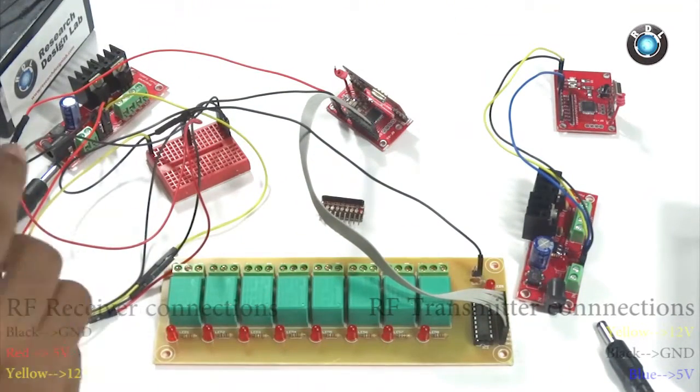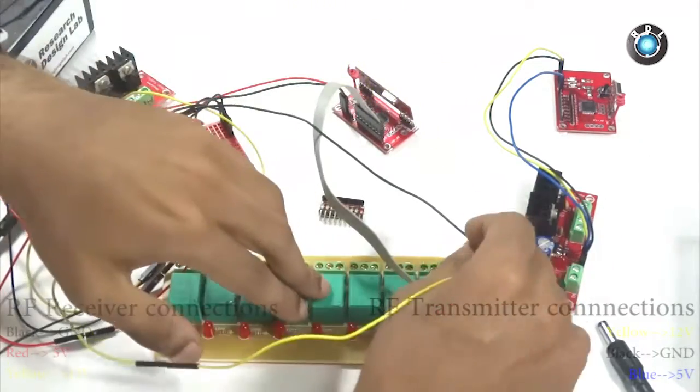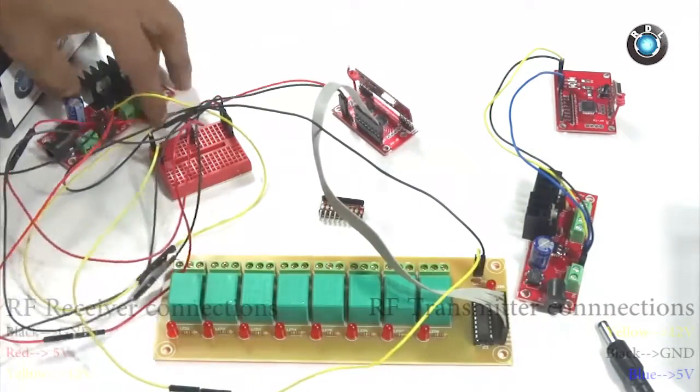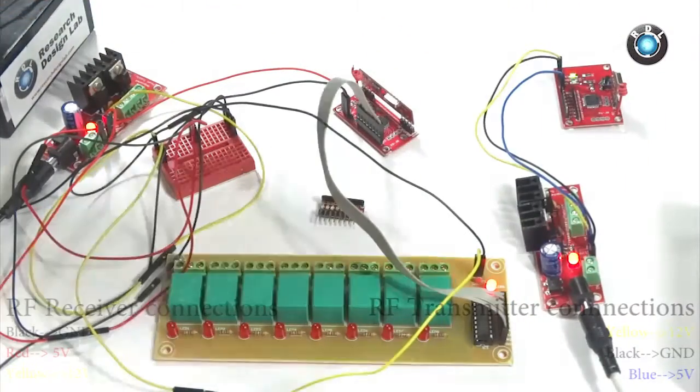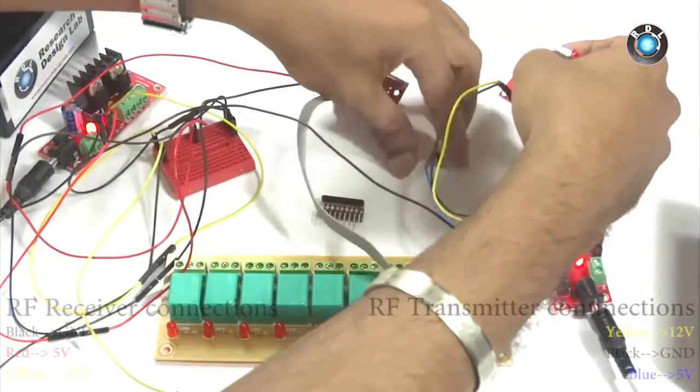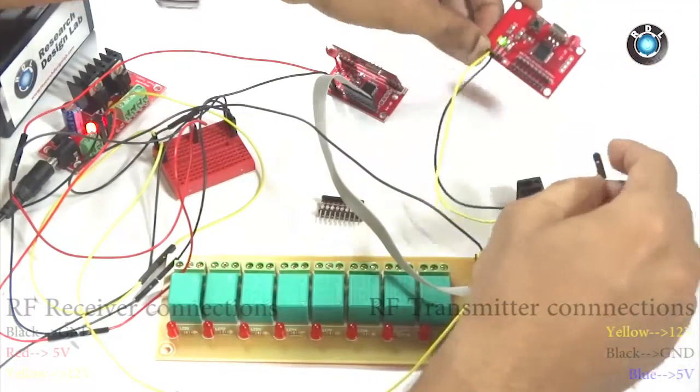Since this relay uses 12V, we need to power on the board with VCC equivalent to 12V. Let me connect this yellow wire to the VCC of the relay board. Now turn on the two regulated power supply boards. Normally it would take around 8 seconds for the board to load its bootloader. So let us give it some time.